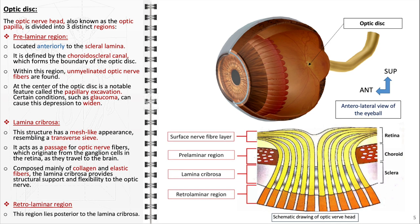The retrolaminar region lies posterior to the lamina cribrosa. It is characterized by the myelination of optic nerve fibers, which occurs immediately after they pass through the lamina cribrosa. This myelination is critical for the rapid transmission of visual information to the brain. The retrolaminar region also has a richer vascular supply compared to the prelaminar region, supplied by the short posterior ciliary arteries. The structural integrity and health of this region are vital for the overall function of the optic nerve as it transitions from the eye to the brain's visual pathways.